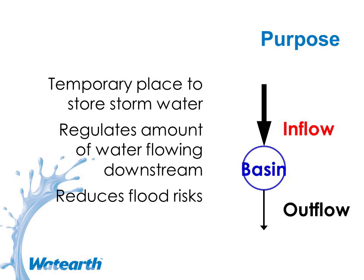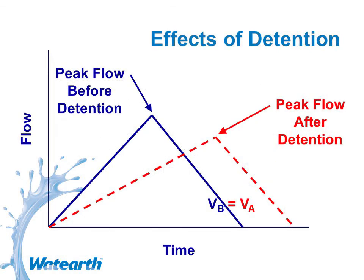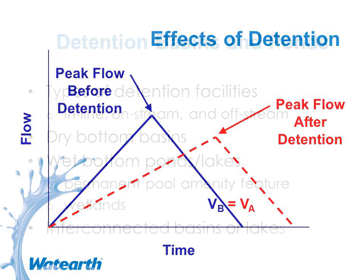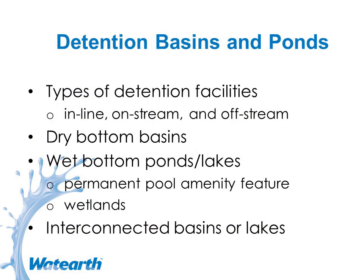Looking at conceptual triangular hydrographs, peak flow before detention is shown in blue, and after routing through the basin that's dampened and the hydrograph shifts. The volume remains constant unless you have an infiltration feature built into the detention. There are various types of detention basins: in-line, which is right in the stream; off-stream, which is an individual detention basin; and on-stream, which diverts flows out of the channel into the detention basin.